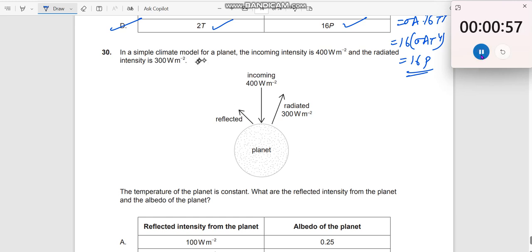Question number 30. A simple climatic model for a planet. Incoming intensity. Incoming is 400.